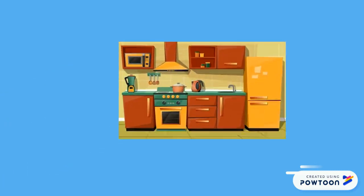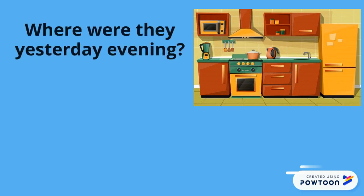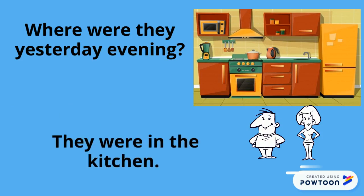For the last example, we have the following question: Where were they in the evening? Since we have two people — plural form — we're going to answer in the following way: They were in the kitchen.